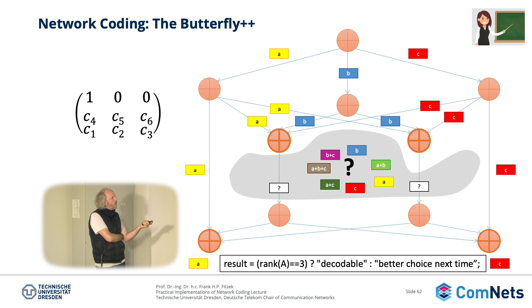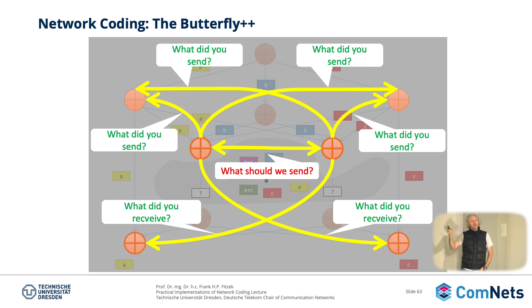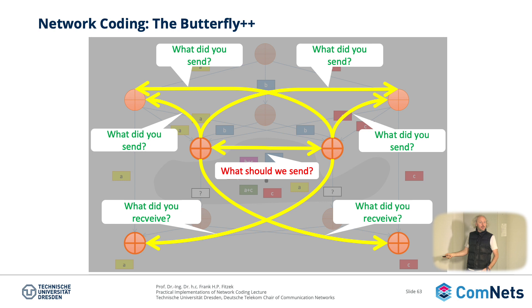Why do we come up with this example? In order to make the right decision about what to code together, we looked at this from the top and asked what is really possible here. But we know the topology, and we know what happened. These intermediate nodes first have to ask their neighbors what they will send — you should not send the same as the other. You also have to know what is already flowing to the end nodes, what they already have, and what was sent to the others. Those are all the questions you need to answer from the topology.